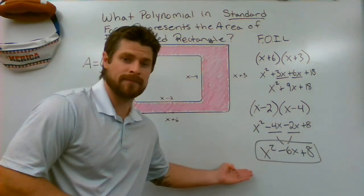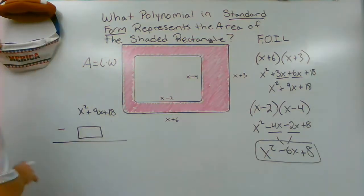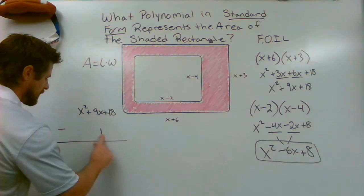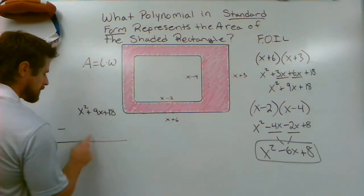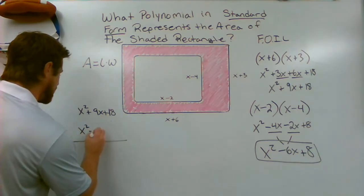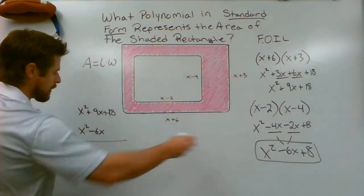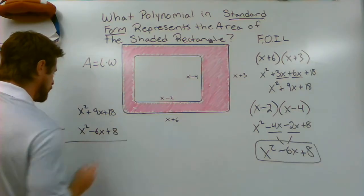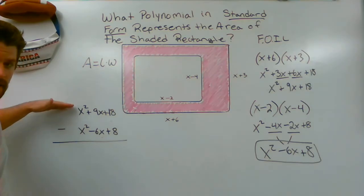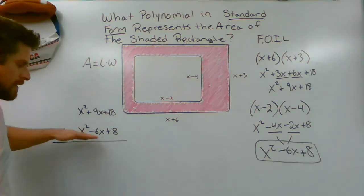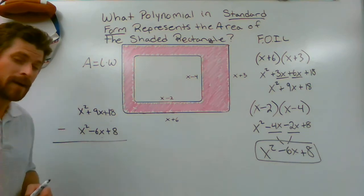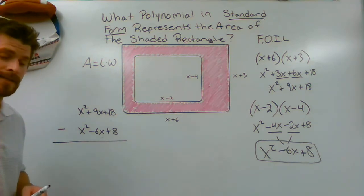So I can take this information right now, slide it on over here. And instead of the small rectangle, I'm going to write down the area that we found for it, which was X squared minus 6X plus 8. All right. Now I'm taking this trinomial, subtracting this trinomial. Take your time here. There are possible errors and misconceptions that could come into play.